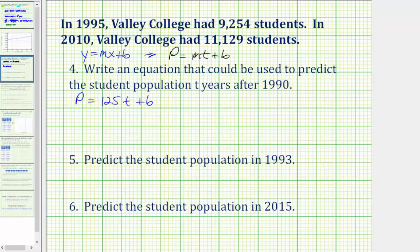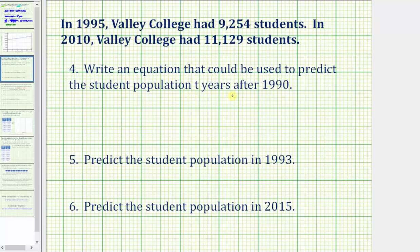Now let's look at question four. We're asked to find an equation that could be used to predict the student population t years after 1990. We'll find an equation in the slope-intercept form, which is y equals mx plus b, where m is the slope, b is the vertical intercept, x is the input variable, and y is the output variable. But in our case, because the input variable is t, the number of years after 1990, and the output is the student population, we'll be using this equation in the form p equals mt plus b.